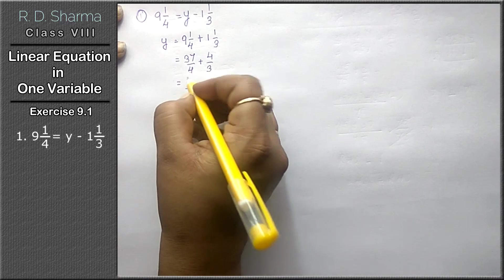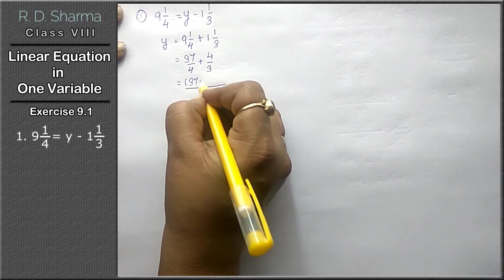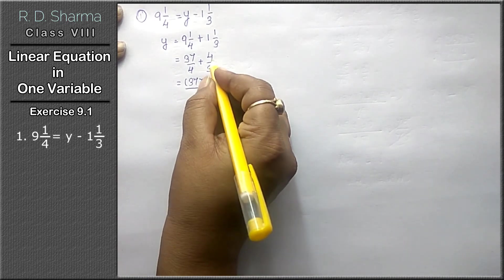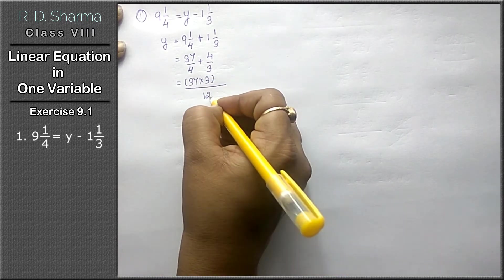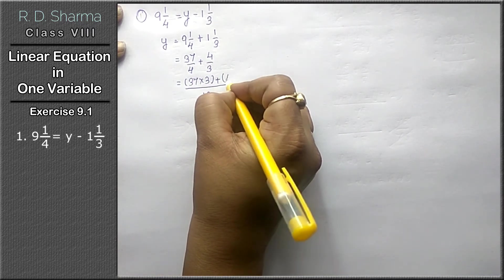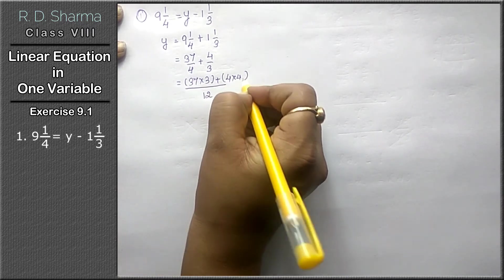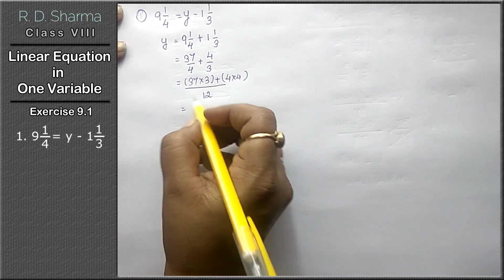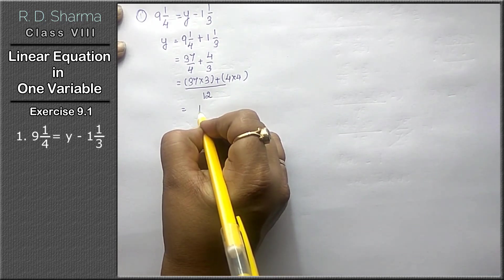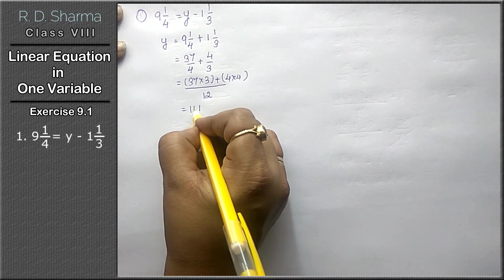37 will be multiplied by 3, so 37 into 3. And 4 will be multiplied by 4, so 4 into 4.